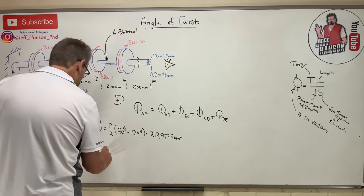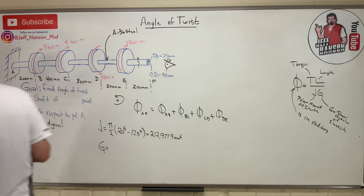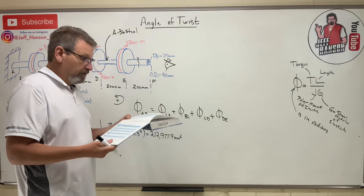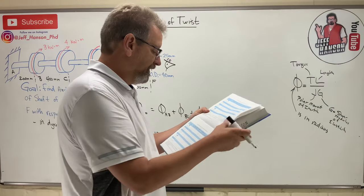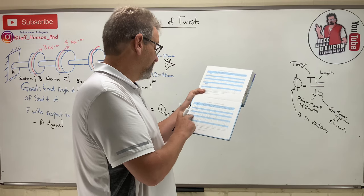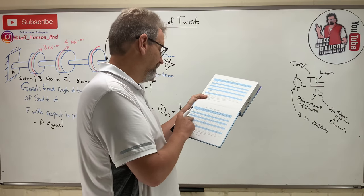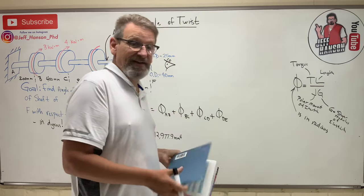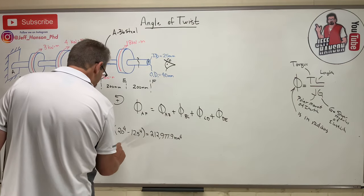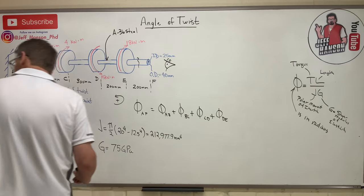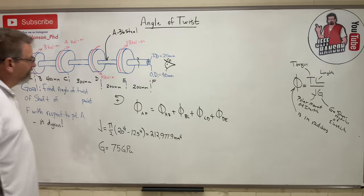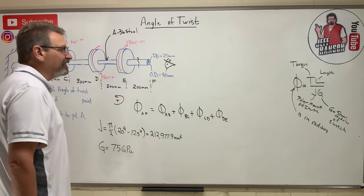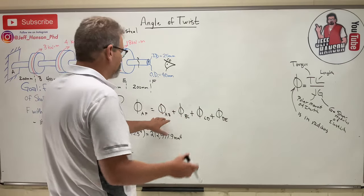Next we need G, the shear modulus of elasticity. We're working in metric units, so I'll go to the SI units table and look up A36 steel. G is 75 gigapascals. I need to be careful with units when building this equation. The lengths of each section are given, so the next thing needed is the torque in each section.